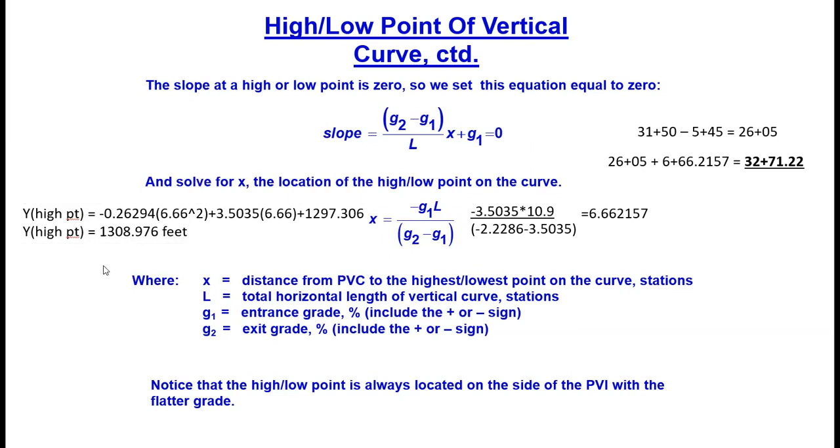This now fully answers our question. We have our parabolic equation, we used that equation to find the high point elevation based on the location of that high point which had an x of 6.66, and we also found the station of that high point. In total, we have a high point at station 32+71.22 that occurs at an elevation of 1308.976 feet, which does line up with the values that we estimated just looking at our design plans.